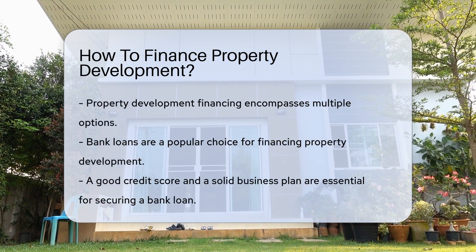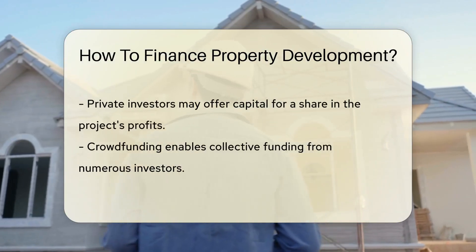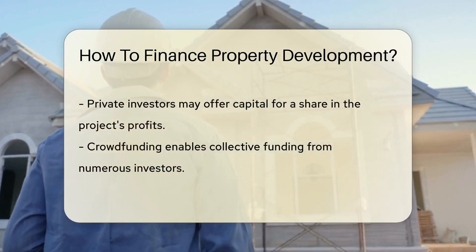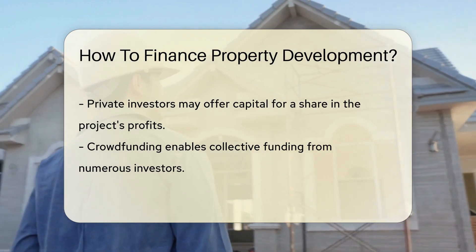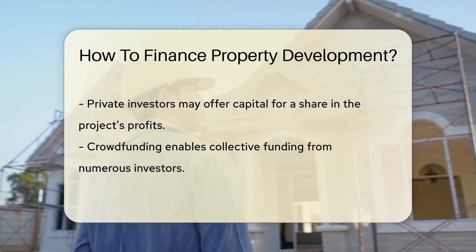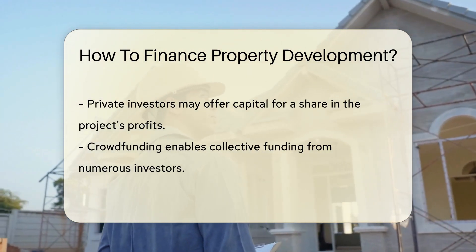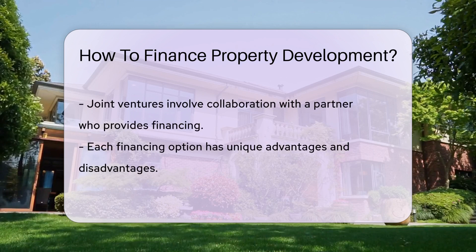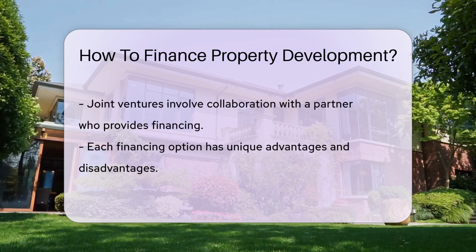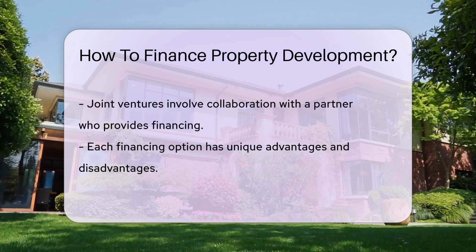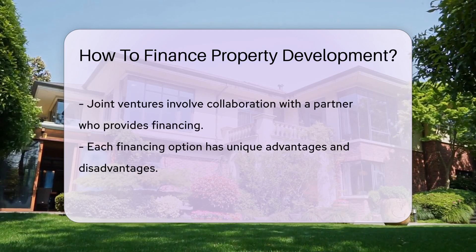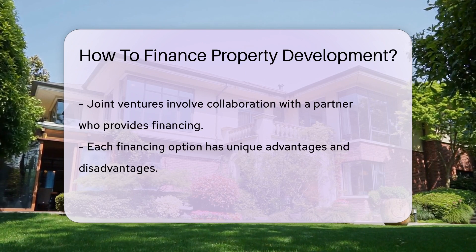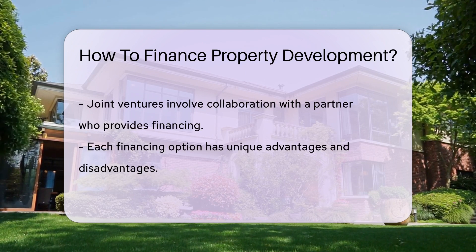Bank loans are a common choice, requiring a good credit score and a solid business plan. Private investors can provide capital in exchange for a share of the profits. Crowdfunding platforms allow multiple investors to fund a project collectively. Joint ventures involve partnering with another party who brings financing to the table.